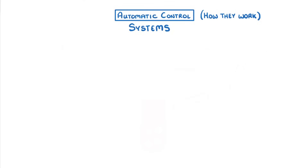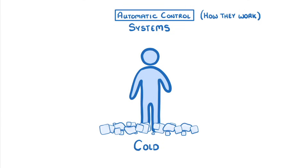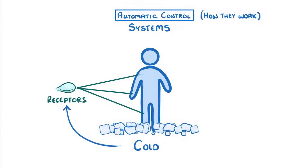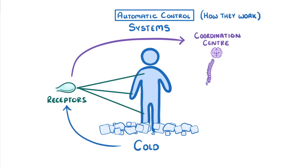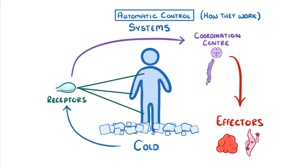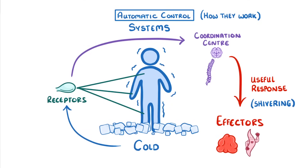To demonstrate this, let's imagine a scenario. Say we walk into a room and it's really cold. The low temperature will be detected by receptors, such as in our skin, and the nervous system will then send impulses to coordination centres like the brain and spinal cord. These interpret the information and then send another set of signals to the effectors, such as our muscles, that can carry out useful responses like shivering. Given a bit of time, this shivering will increase our body temperature and we'll return to normal.